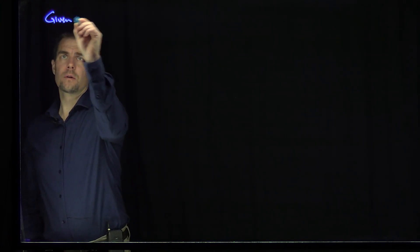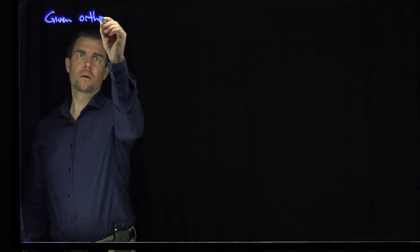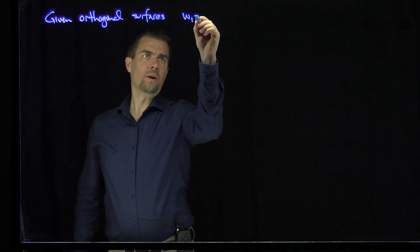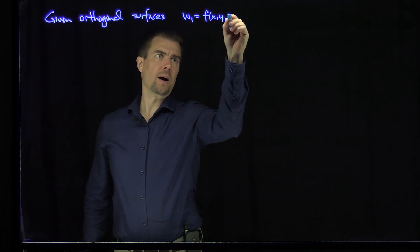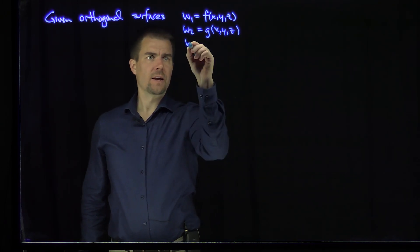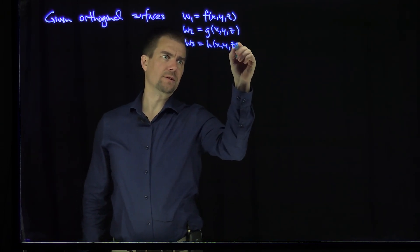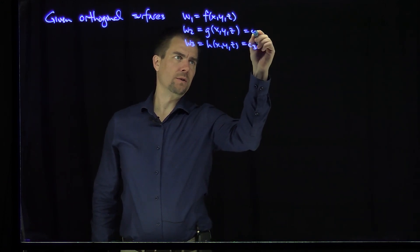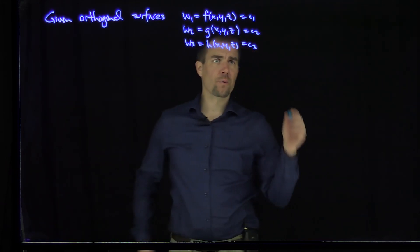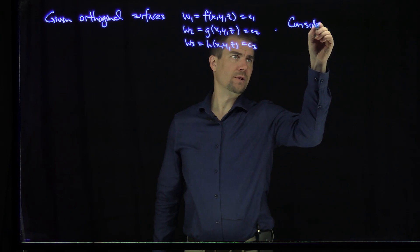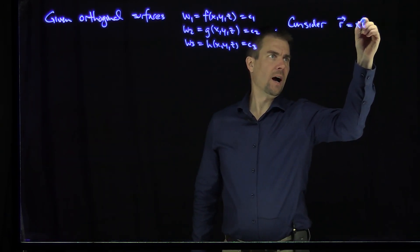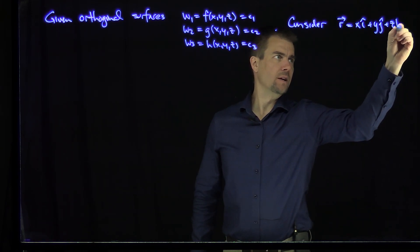If we're given orthogonal surfaces — w1 equals f(x, y, z), w2 equals g(x, y, z), and w3 equals h(x, y, z) — so the surfaces will be c1, c2, and c3. If these surfaces, for all values of c1, c2, and c3, are orthogonal to each other, then we're going to consider the vector field of position r, which is just x î + y ĵ + z k̂.